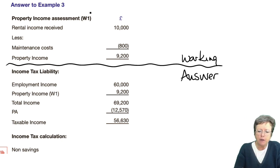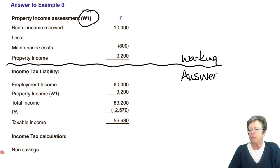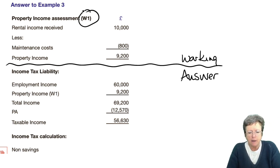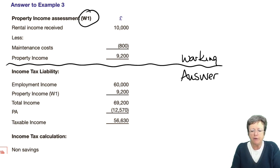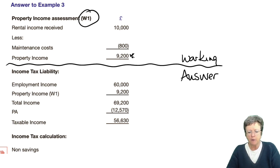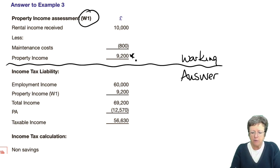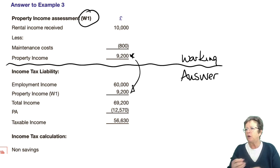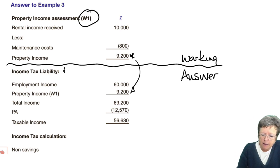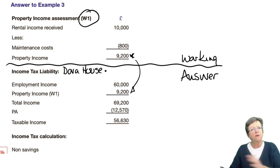So this is a working, clearly shown. From the question, we see that she had £10,000 rental income and maintenance costs of £800. So her property income is £9,200. That is then put into her income tax computation. So if you were doing this as a full answer, you would put her name, Dora House, income tax computation, 2022-23.